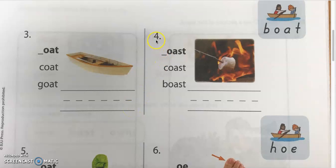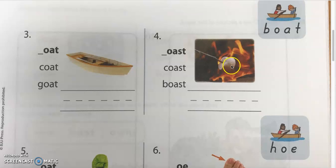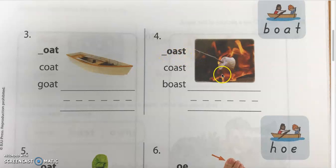Number four, we have OST: coast, coast; B-OAST, boast. And this picture over here — something is being grilled with fire — it's T-OAST, toast. I am toasting a marshmallow — T-OAST, toast.